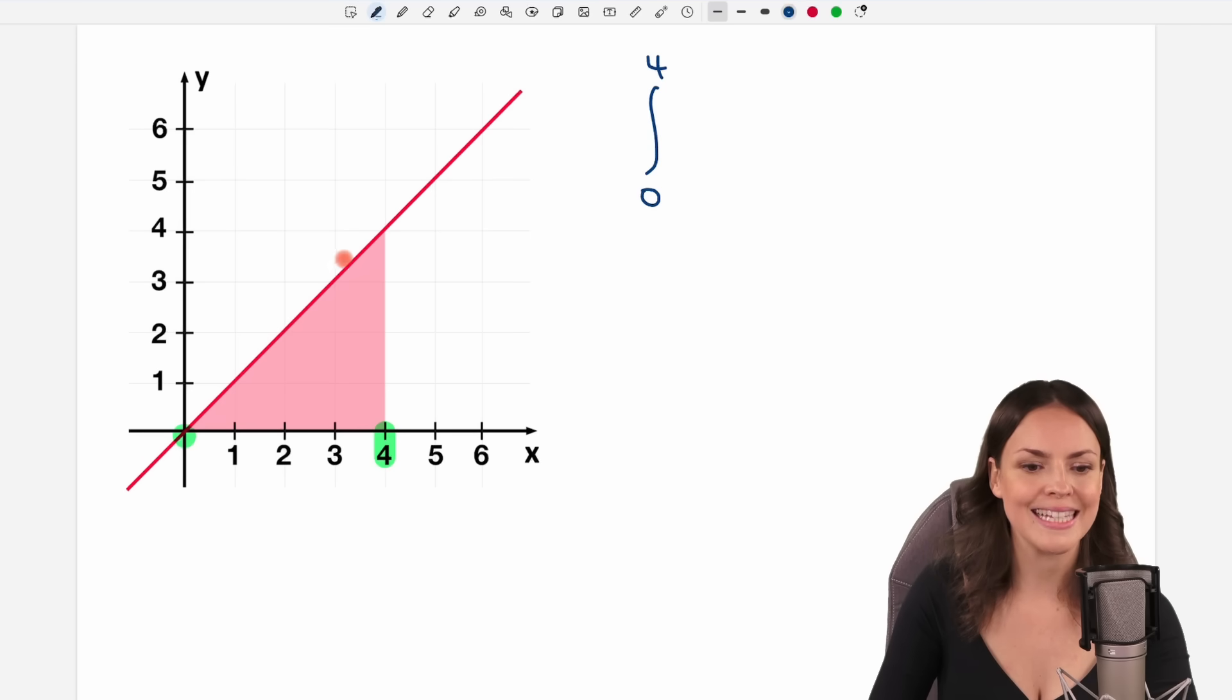How does my function look like? This is just this line here. So if I call it f(x), my function is just x. This is what goes into my integral, and then we always have to close an integral with dx.